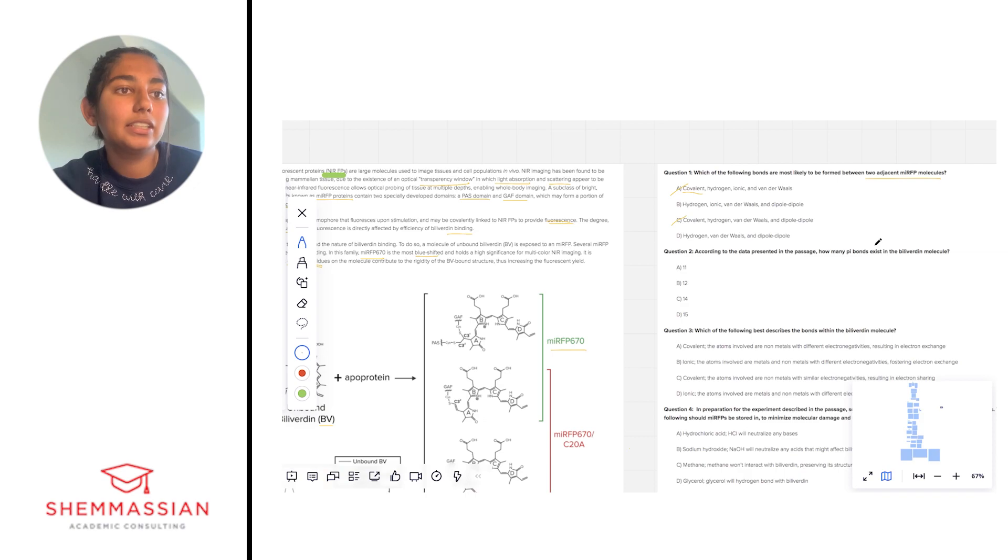Now if we look at answer choice B, we see ionic in this answer choice. Again for the same reason we were talking about earlier, ionic bonds are not intermolecular forces—they are interatomic forces between a positively and negatively charged ion in which electrons are being given away or taken up. So we're going to eliminate B for that reason. Then we are left with answer choice D.